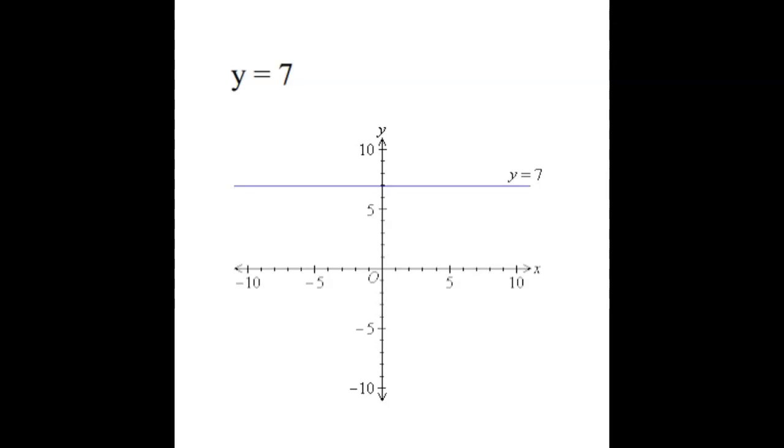All right guys, let's talk a little bit about why the derivative of something like y equals 7 is 0. Why is that derivative 0?